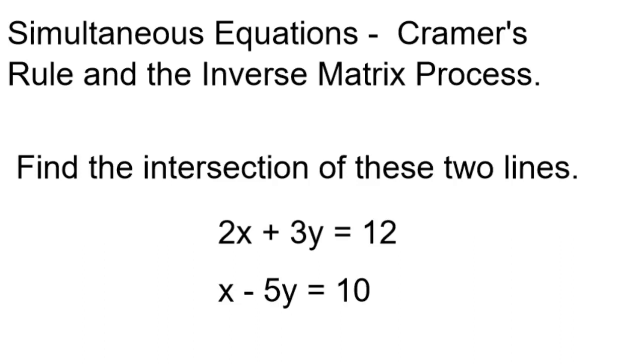Alright, in this video we're going to do simultaneous equations, but we're going to use Cramer's rule and the inverse matrix process on the same set of equations. So we're going to find the intersection of these two lines: 2x plus 3y equals 12, and x minus 5y equals 10.